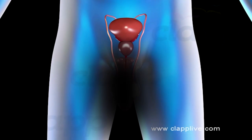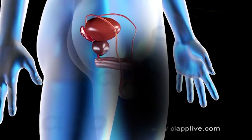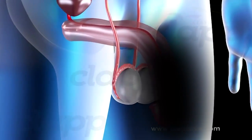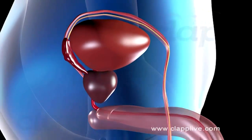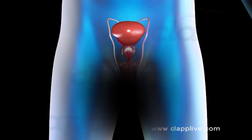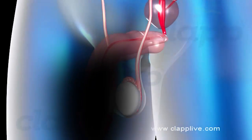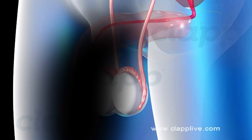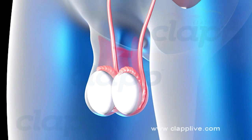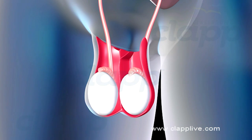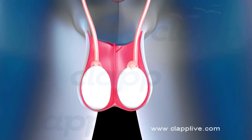The male reproductive system is located in the pelvic region. It consists of a pair of testes, accessory ducts, accessory glands, and external genitalia. Testes are the primary sex organ of the male and are suspended in the scrotal sacs. The scrotum is a pouch of pigmented skin arising from the lower abdominal wall and hanging between the legs. It is divided internally into right and left scrotal sacs by a muscular partition called the septum scrotae.